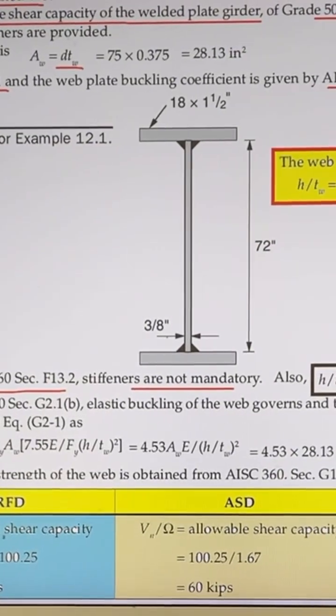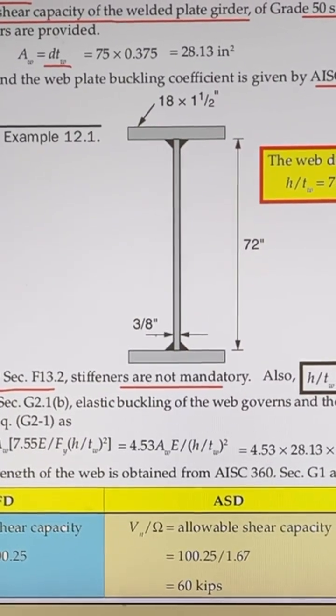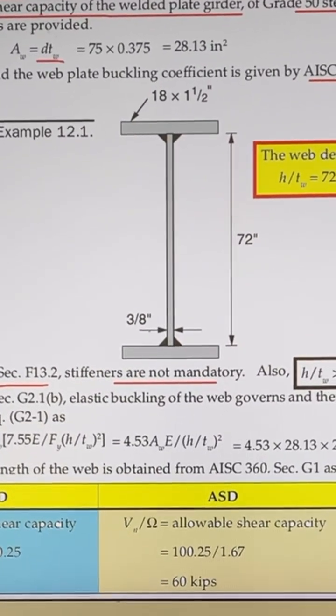So here, if you can see 0.6 Fy Aw, if we substitute these values, we can calculate the result.